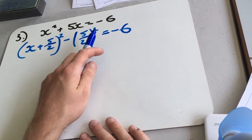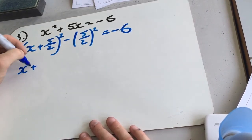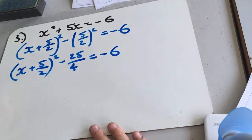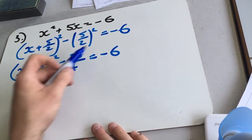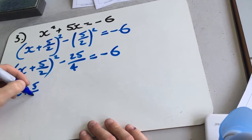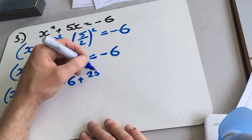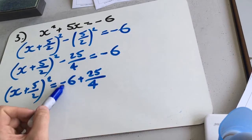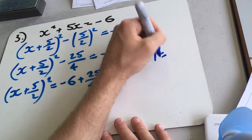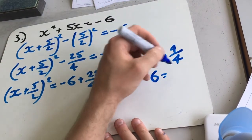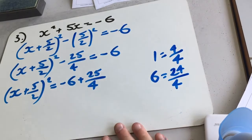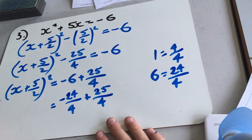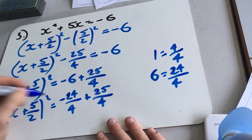Now we just need to simplify this. So again, square the tops, square the bottoms. So x plus 5 over 2 squared minus 25 over 4 equals minus 6. Now we're going to add 25 over 4 to this side. So x plus 5 over 2 squared equals minus 6 plus 25 over 4. Now to add these together, we need to find out how many quarters 6 represents. So I know 1 is 4 quarters. Therefore 6 is going to be 24 quarters. So we've got minus 24 over 4 plus 25 over 4, which is going to leave us with 1 quarter.